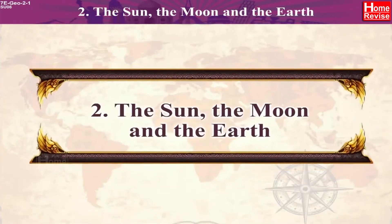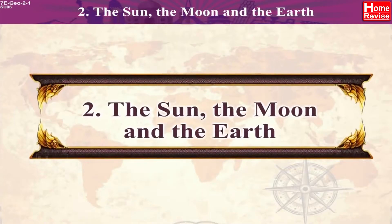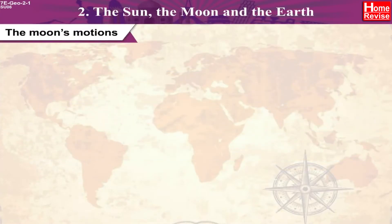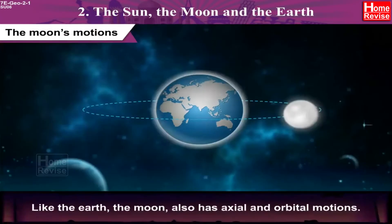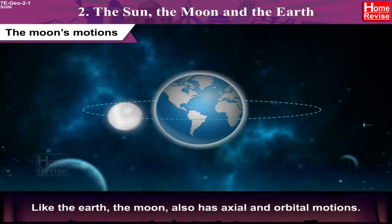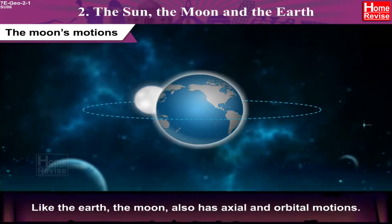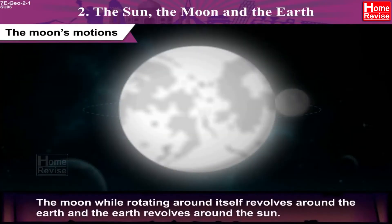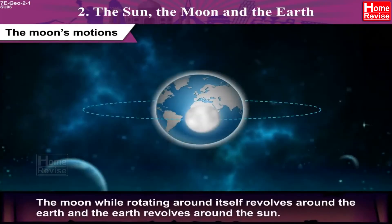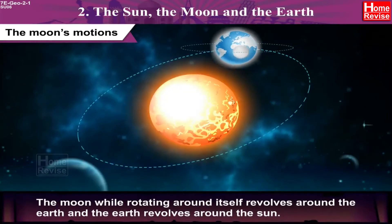Chapter 2: The Sun, the Moon and the Earth. The Moon's Motions. Like the Earth, the Moon also has axial and orbital motions. The Moon, while rotating around itself, revolves around the Earth, and the Earth revolves around the Sun.